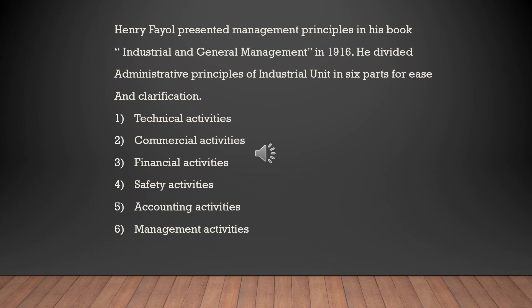Fayol focused on the role of the manager, believing that not anyone can be a manager. A manager needs certain skills and qualities to manage people and resources in an organization. The six managerial skills suggested by Henry Fayol are physical qualities, mental qualities, educational qualities, moral qualities, technical qualities, and experience — all needed for the best implementation of the 14 principles of management.